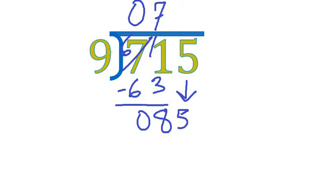Bring down the 5. 9 going into 85, how many times? Well, I know that 9 can go into 81. 9 times 9 is 81. Now let's subtract it. This is 5 minus 1, 4. 8 minus 8 is 0. We could mark it but we don't have to. So I've got a leftover here. This 4 does not work and there's nothing left to bring down. So 4 is my remainder, and I can mark it with R4.